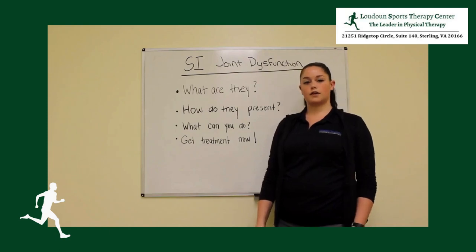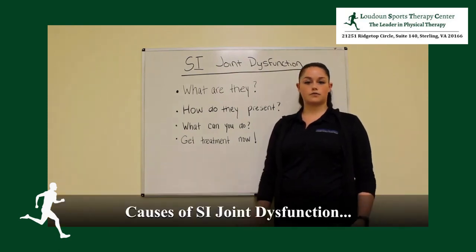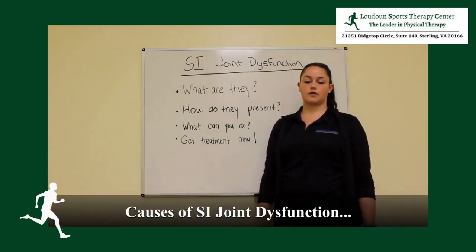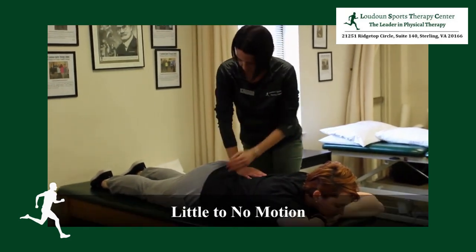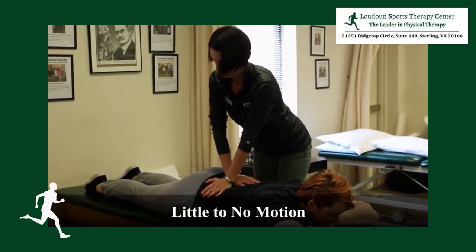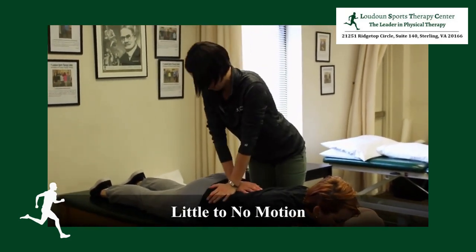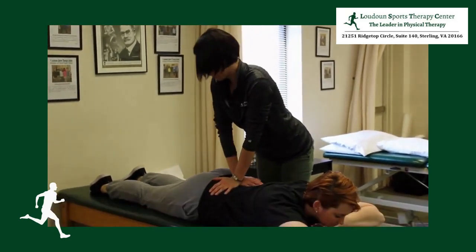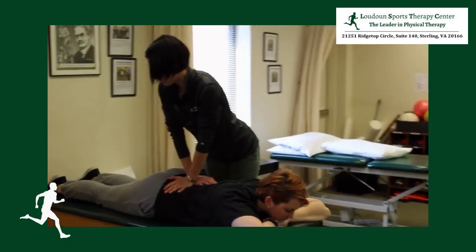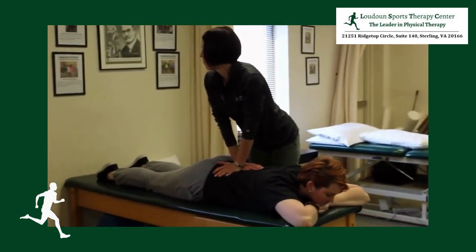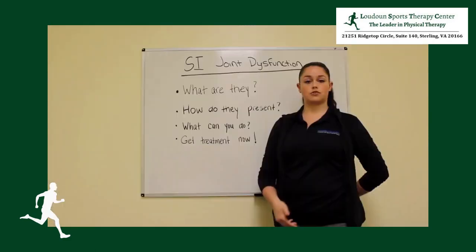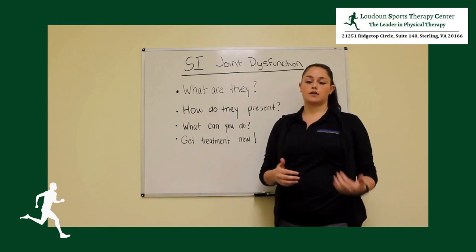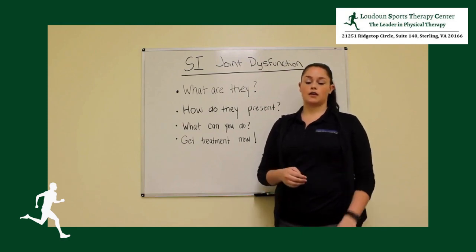There are a few different causes for SI dysfunction, and that can be little to no motion — decreased motion at the joint. There's not much motion at the joint already. It is meant to be a shock absorber between the upper body and the trunk.